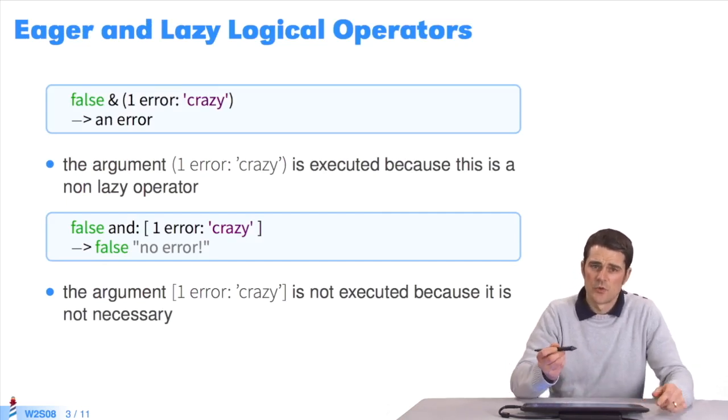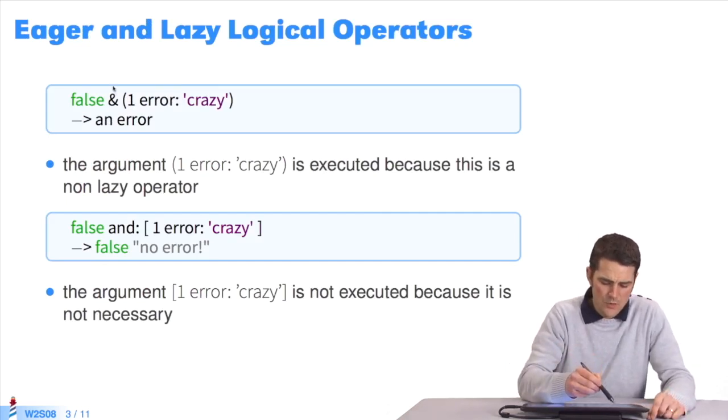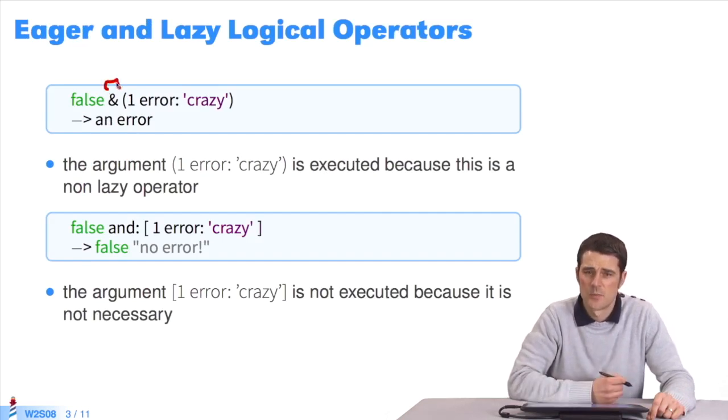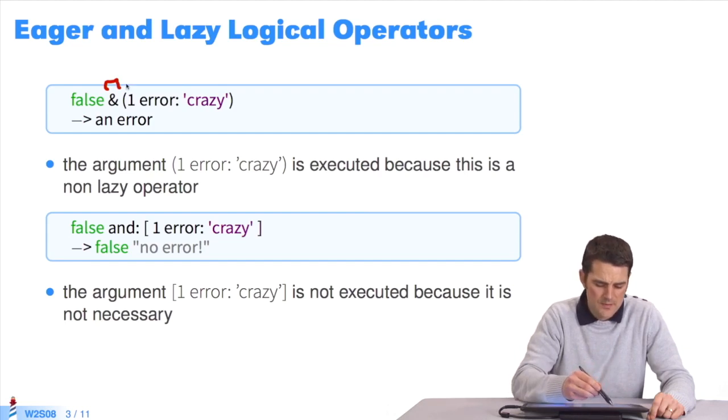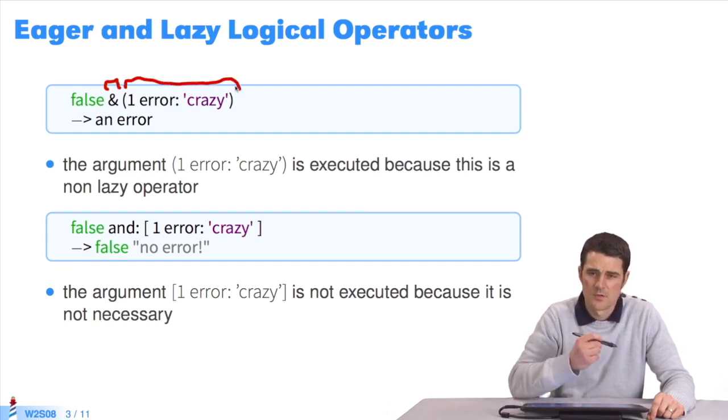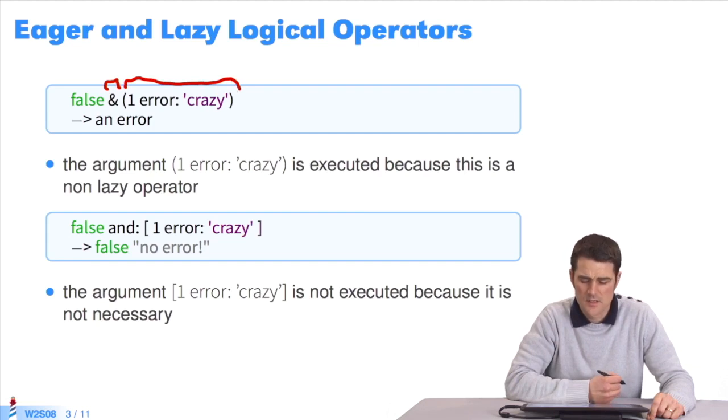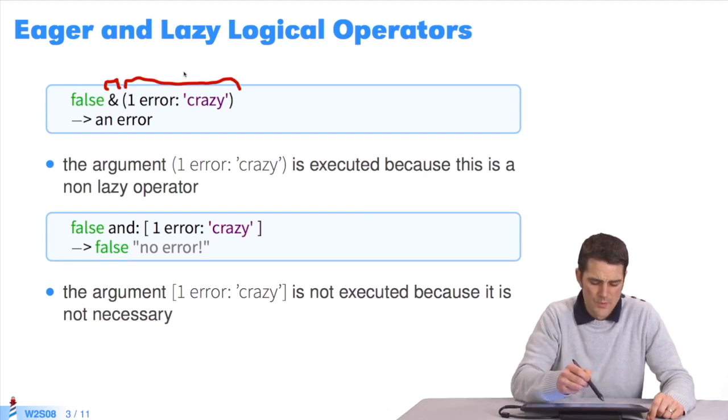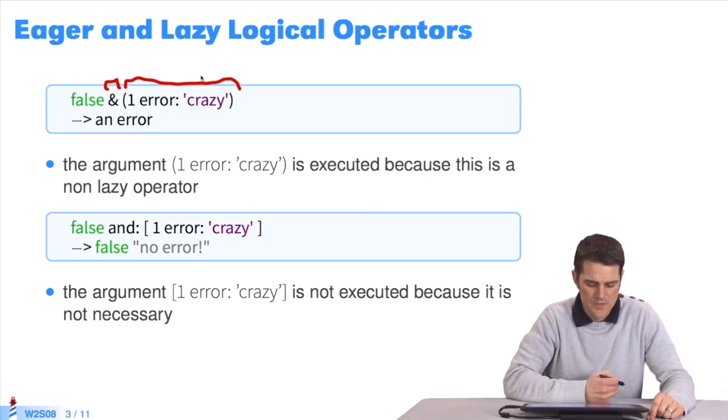In the first example of this slide, you send the message AND, a binary operator, to the object false. You pass it a parameter, which is an expression between parentheses that triggers an error. The evaluation of this whole expression triggers an error because the operand has also been evaluated in this Boolean expression. The operand has been evaluated, hence the mistake.